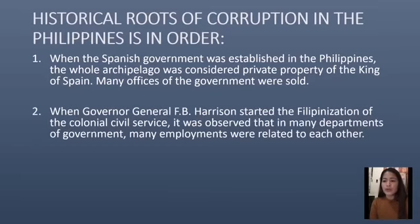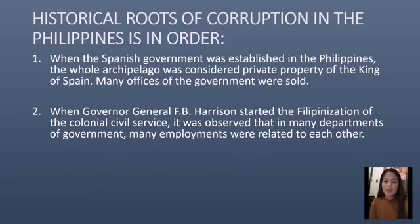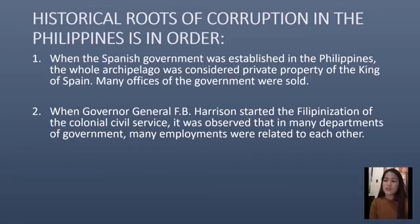The second historical root: when Governor General F.B. Harrison started the Filipinization of the colonial civil service, it was observed that in many departments of government, many employees were related to one another. Family influence extended far beyond employment. Family influence was distorted, as members weighed in on applications for business licenses, franchises, and government contracts.